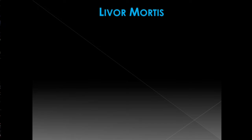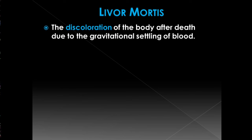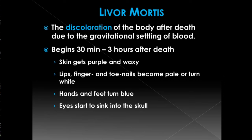Then we have livor mortis, commonly called the discoloration of death. The body starts to turn different colors as blood settles — no longer moving through the veins. If someone is laying on their back, blood pools in the back; if upright or sitting, it pools in the legs first. Livor mortis sets in about 30 minutes to 3 hours after death. The corpse's skin turns purple and waxy, lips, finger, and toenails become pale or white, hands and feet turn blue, and the eyes start to sink back into the skull.